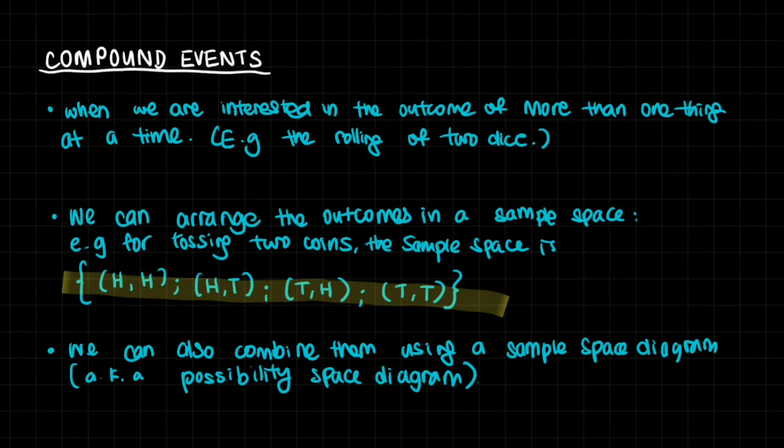So maybe now you have an idea of what these sample spaces and sample space diagrams do. These are meant to help us with compound events. Compound events are when we're interested in the outcome of more than one thing at a time. So we're interested in the girls as well as the boys. And therefore, there are different combinations of girls and guys. One result of girl with one result of guy. So that's why we are interested in two outcomes in this case. We can arrange the outcomes in a sample space.